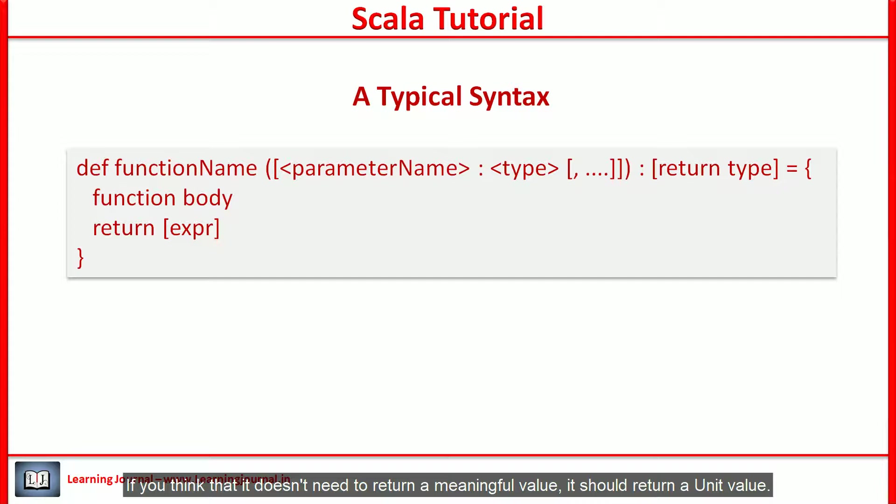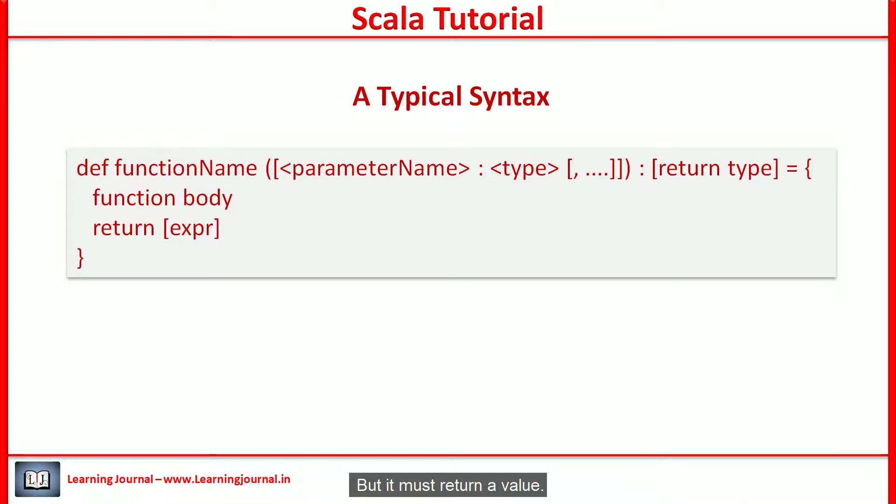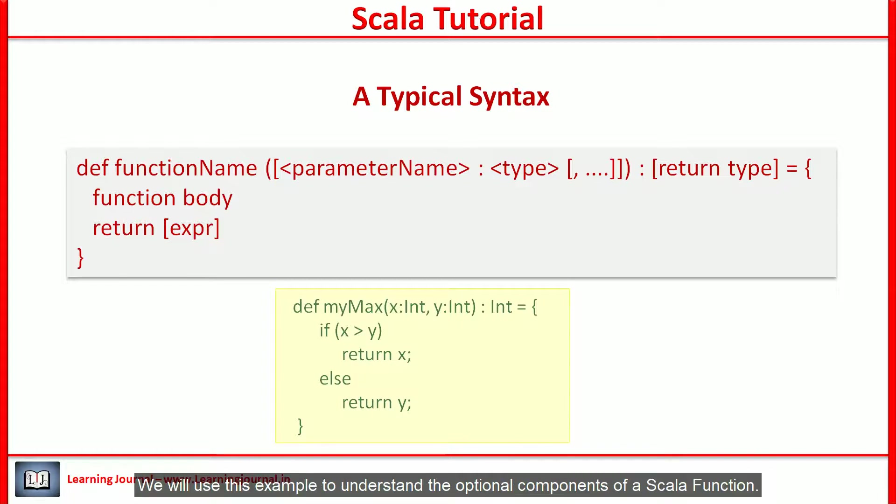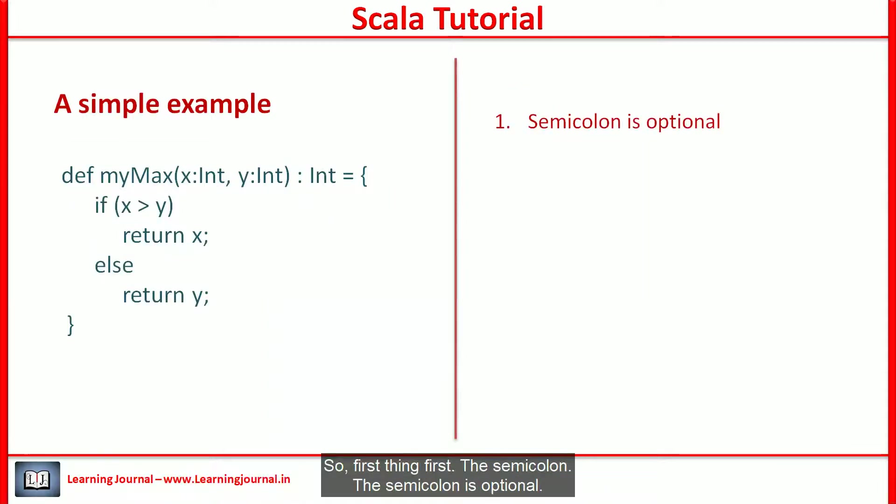One important thing to remember is that the function must return something. If you think that it doesn't need to return a meaningful value, it should return a unit value. But it must return a value. That's a quite simple syntax. Where is the confusion? The first source of confusion is the optional part of this syntax. Let's create an example function. We will use this example to understand the optional components of a Scala function.